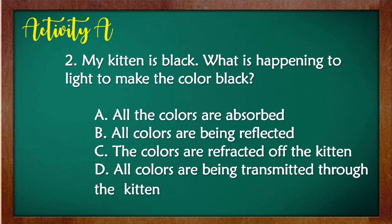Number 2: My kitten is black. What is happening to light to make the color black? Choose the letter of your answer and write it in your notebooks. The answer is: all the colors are absorbed.